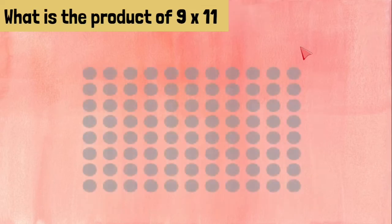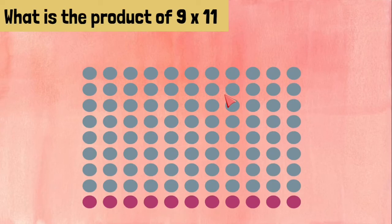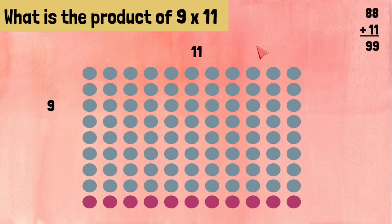9 times 11 — we need 9 rows of 11. We will take the 88 blue ones and add 11 purple ones. We will get 99. So 9 times 11 is 99.